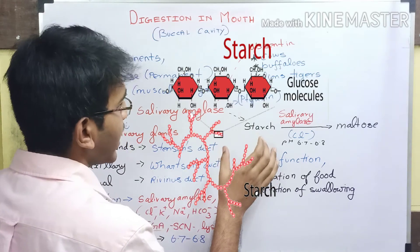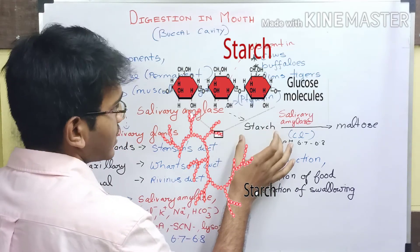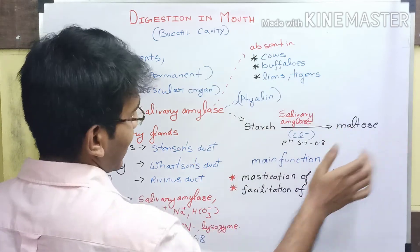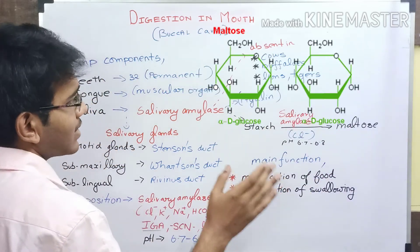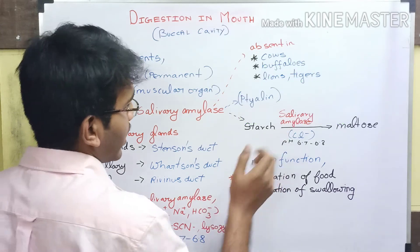The main function of salivary amylase is the breakdown of starch, a polysaccharide, to maltose, a disaccharide. The salivary amylase enzyme is activated by the ion chlorine.